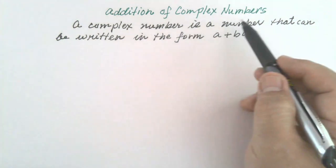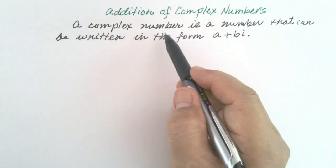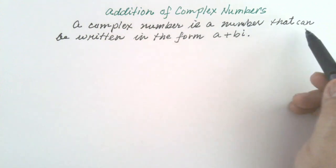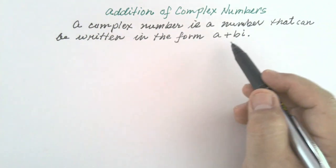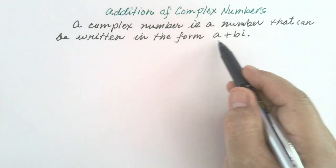Addition of Complex Numbers. A complex number is a number that can be written in the form A plus BI. There are two parts.